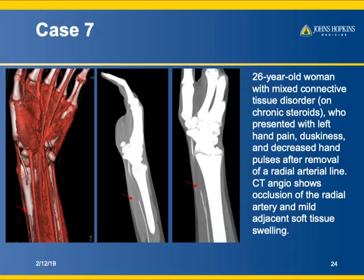A 26-year-old with mixed connective tissue disorder presenting with left hand pain, duskiness, and decreased hand pulses. Looking at the radial and ulnar arteries, you can see occlusion by thrombus of the radial artery — just a beautiful example.